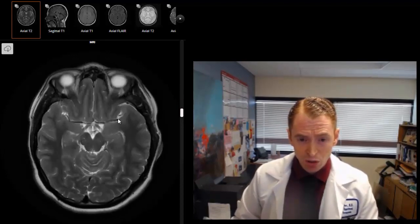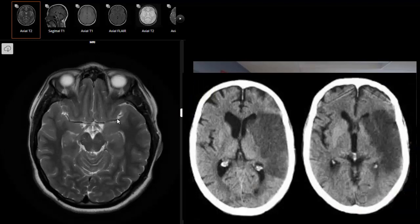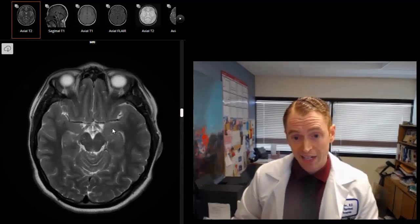However, if a clot gets into the middle cerebral artery, for instance, this is the left middle cerebral artery, a large stroke involving the frontal, parietal, and temporal lobes can form, causing weakness of the right side and speech difficulty and numbness in the right side.